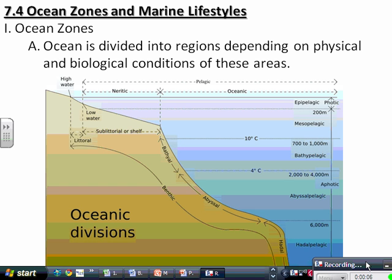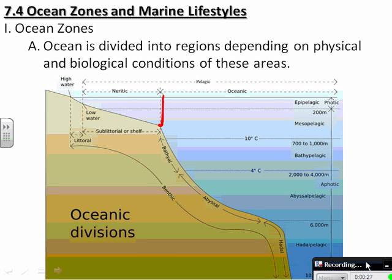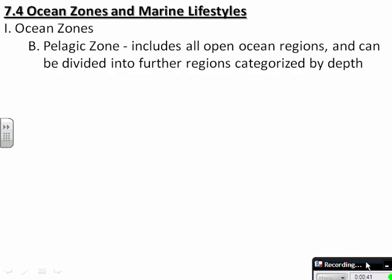The 7.4 notes deal with the oceanic zones and marine lifestyles. We're first going to touch on the different zones that make up the ocean. The ocean is divided into zones based on its physical and biological conditions — things like where the continental shelf is, light penetration as we go deeper, temperature, and light.